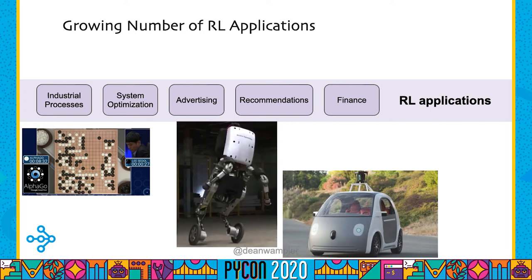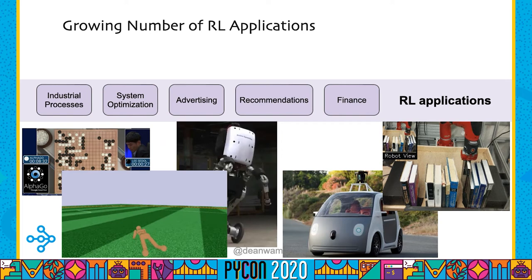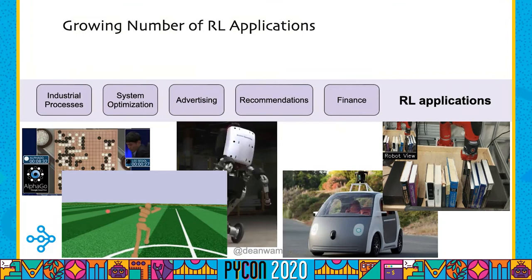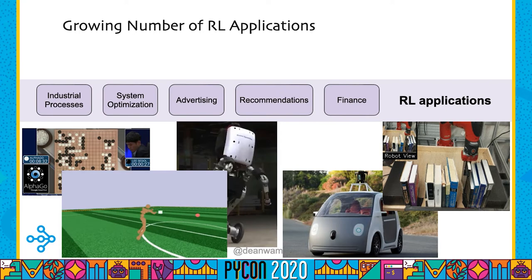Reinforcement learning is also being used in many other contexts: optimizing industrial processes like factory floors and pipelines, optimizing network computing, ad serving and recommendations that get around scaling problems with traditional methods, and finance — where the stock market is a time-bearing system and in theory you can use reinforcement learning to optimize your performance.